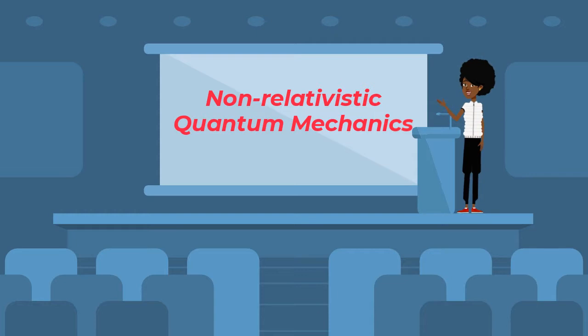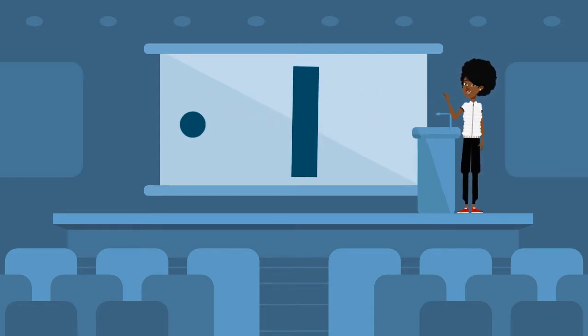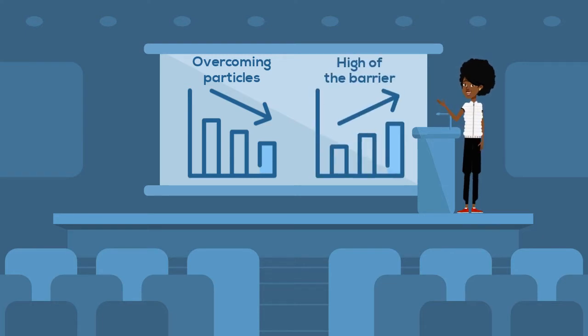And this is what happens in non-relativistic quantum mechanics. When a particle is approaching a very high barrier potential, then the probability of finding it on the other side of the barrier decreases with the increasing height of the potential.